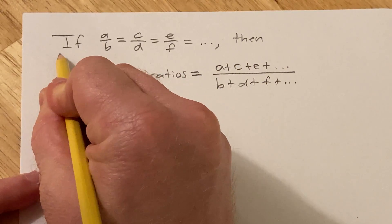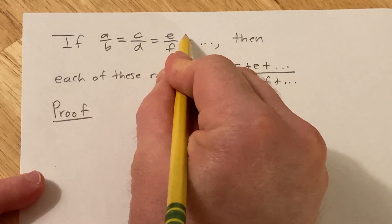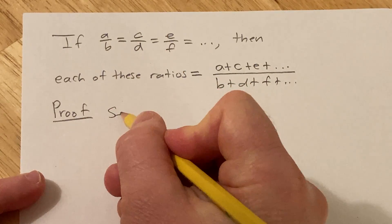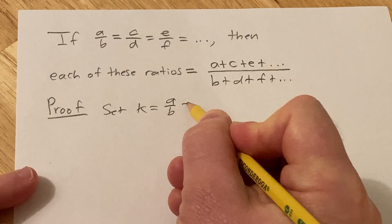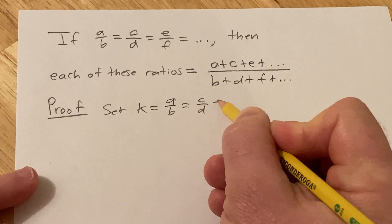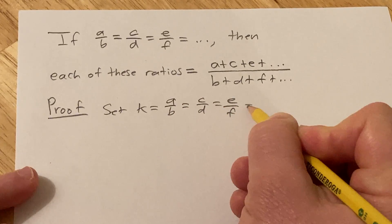Okay, so we assume this is true. So let's go ahead and give this a name. I'm going to say set k equal to a over b equal to c over d equal to e over f, etc. Okay, so we're going to set k equal to all of these.